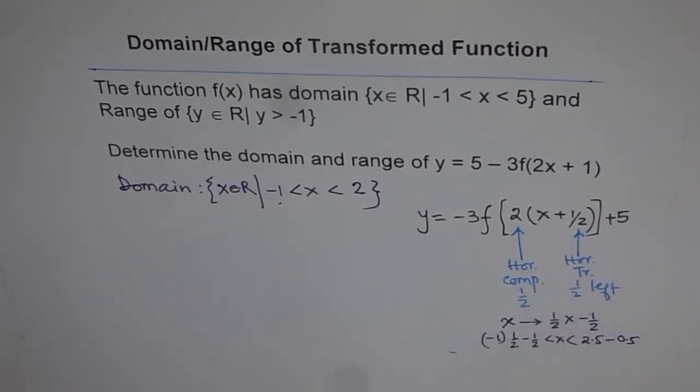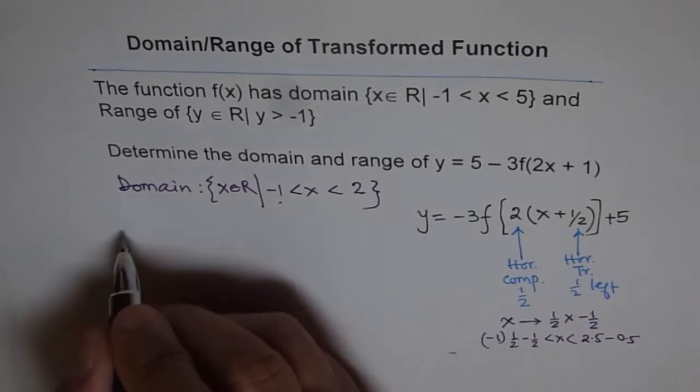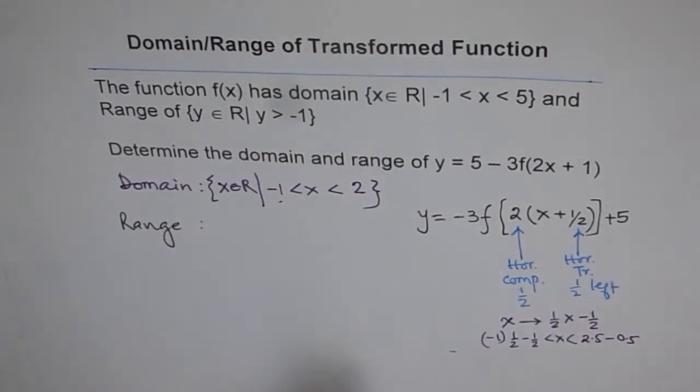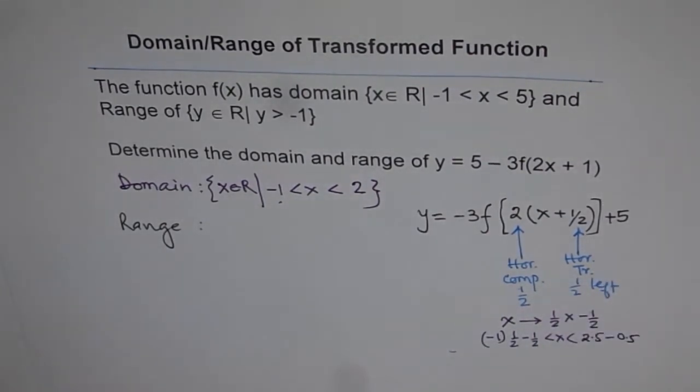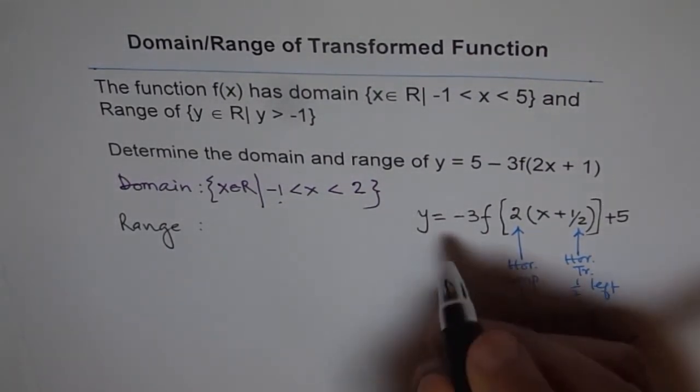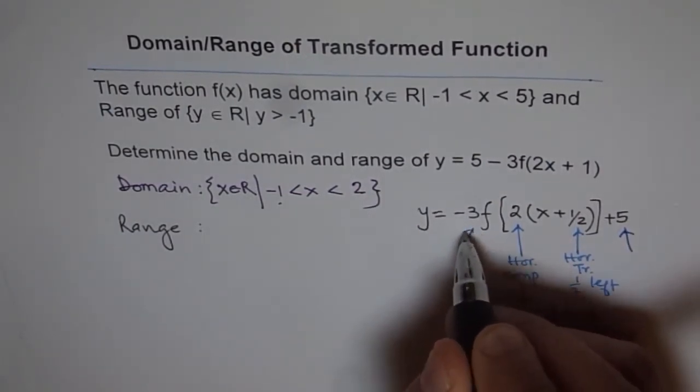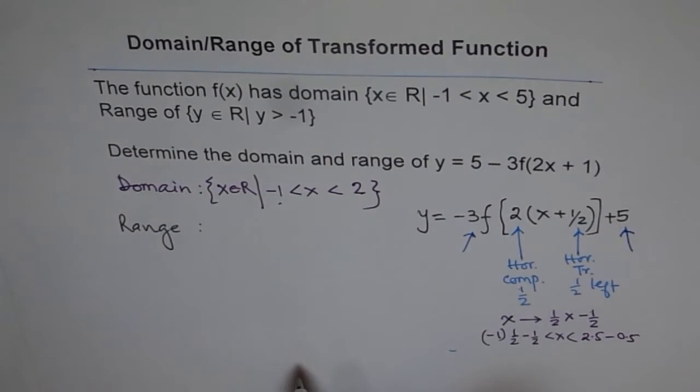Range is actually affected by the values outside this. These are the range values. So what is happening to range?